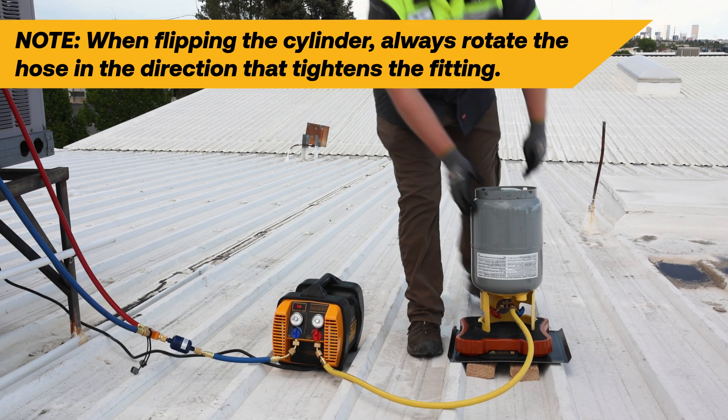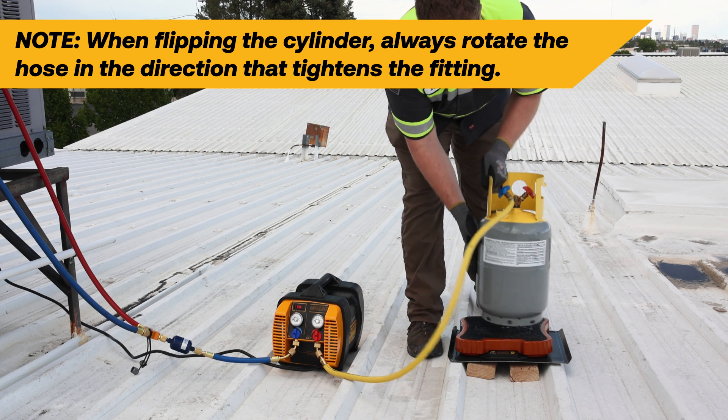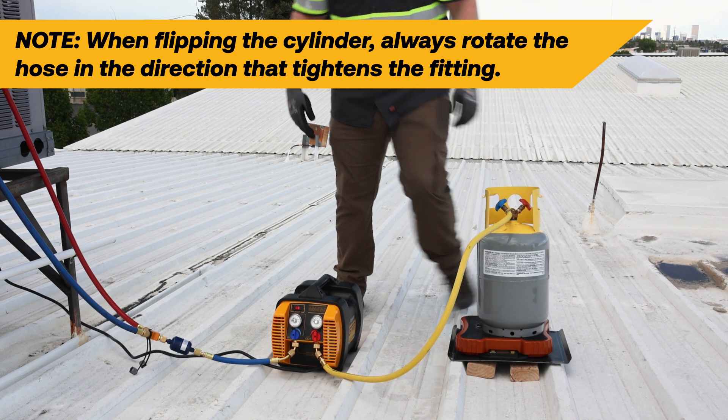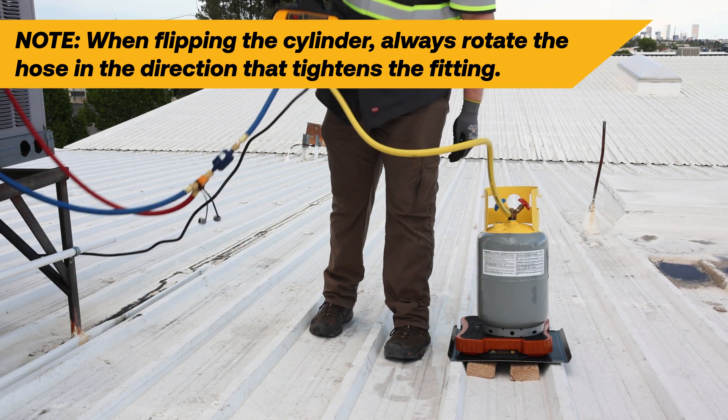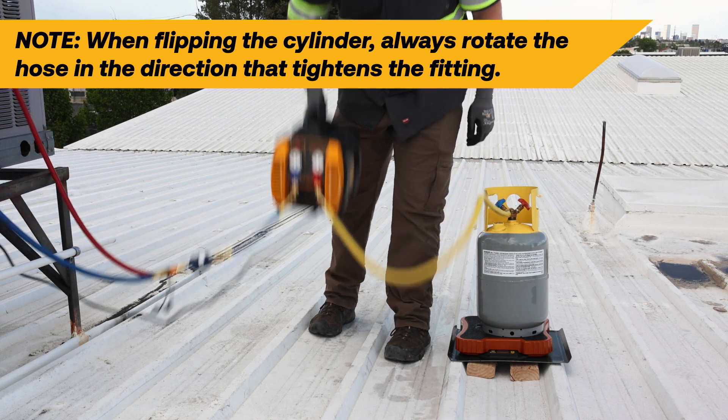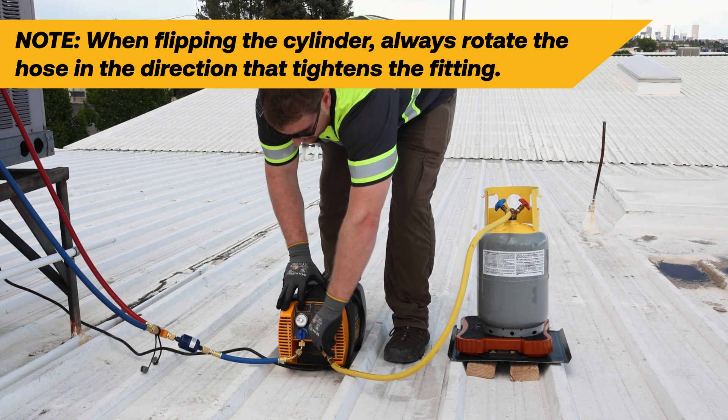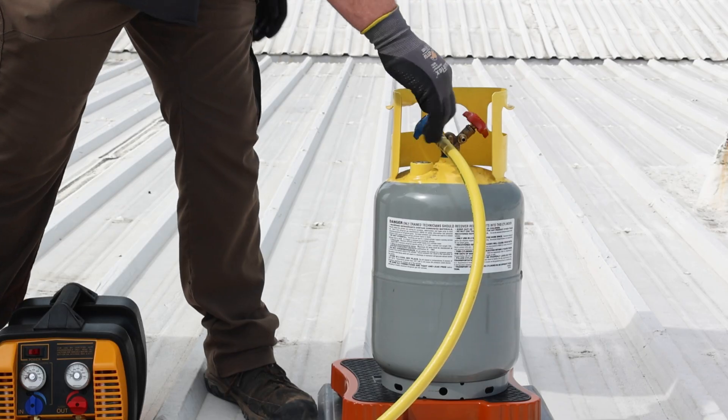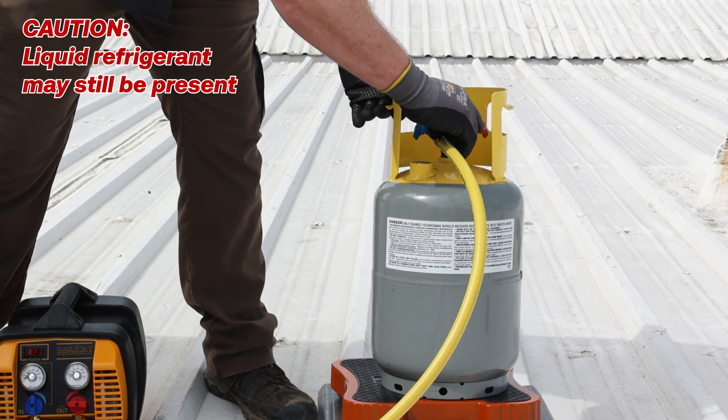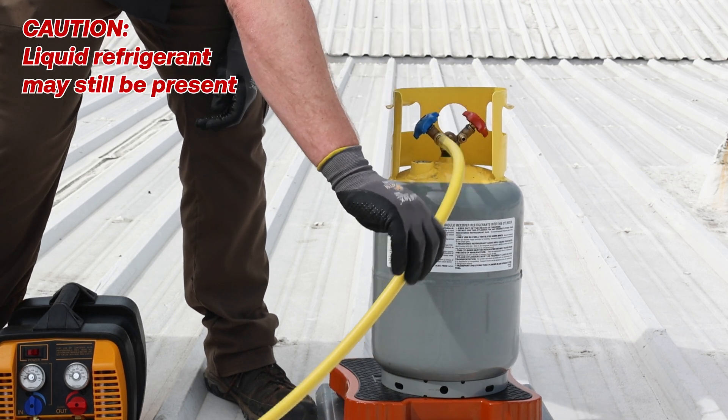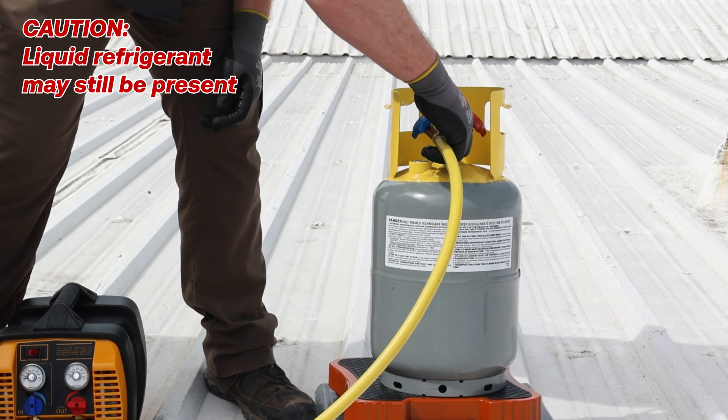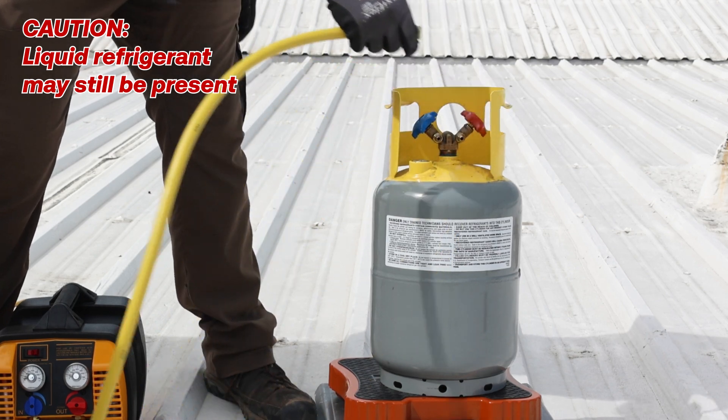When recovery is nearly finished or the recovery cylinder being used is ready to be swapped out for another cylinder due to capacity limitations, the cylinder can be flipped upright. With the cylinder upright, any remaining liquid refrigerant in the output hose can migrate to the recovery cylinder. Clearing the output hose of liquid refrigerant will reduce unnecessary refrigerant loss during the disconnection of the hose after recovery has been stopped.